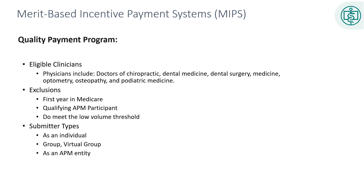MIPS is a combination of three former quality initiative programs: the Physician Quality Reporting System, the Medicare Electronic Health Record Incentive Program or Meaningful Use, and Value-based Payment Modifier, plus one new component providing a single quality reporting system with a single payment adjustment factor based on individual or group performance in Medicare Part B. MIPS is a budget-neutral program, meaning successful reporters earn positive payment adjustments funded by unsuccessful reporters who receive negative payment adjustments.